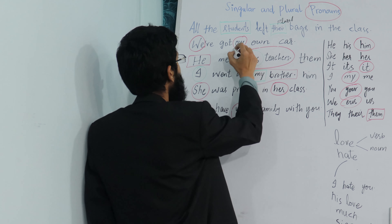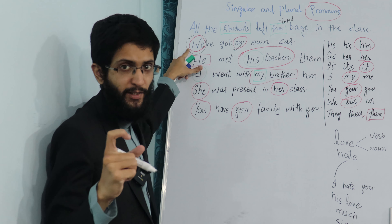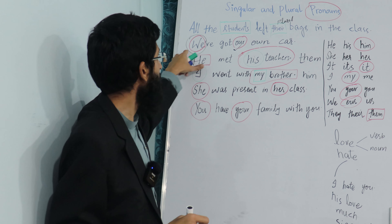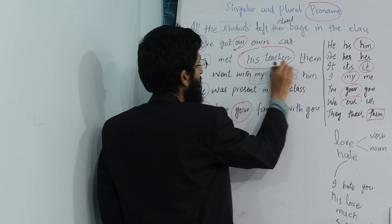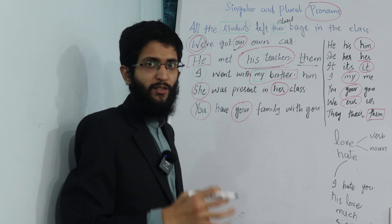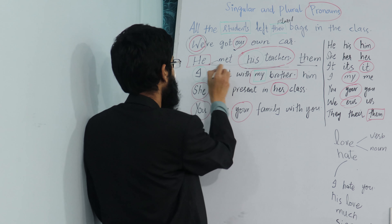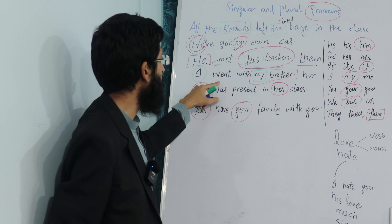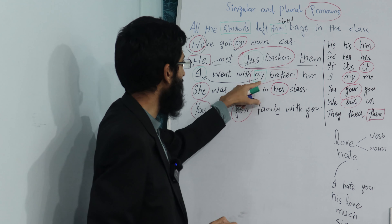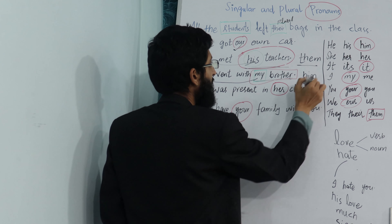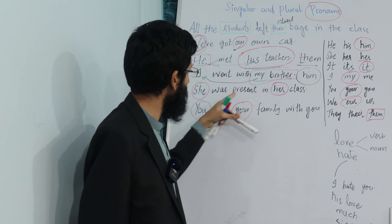We've got our own car — 'our' is linked with the word 'we.' If it were 'I have got my own car,' there would be 'my' instead of 'our.' He met his teachers — 'his teachers' as a whole can be replaced with 'them.' Like, 'he met them.' The word 'them' can be replaced with 'his teachers.' 'His' is actually linked with the word 'he.' I went with my brother — 'my' is linked with 'I,' but 'my brother' as a whole can be replaced with 'him.' I went with him.